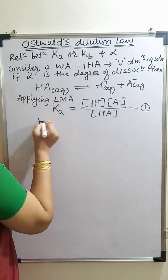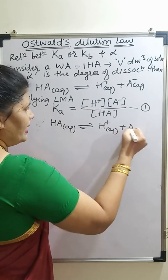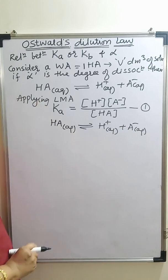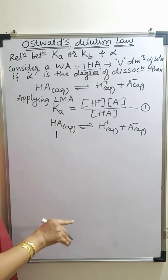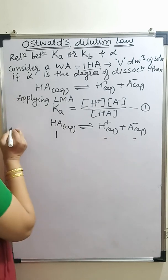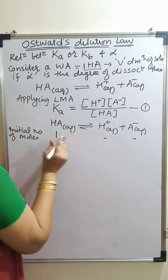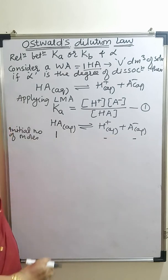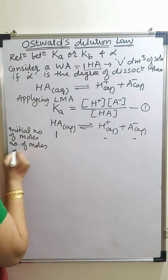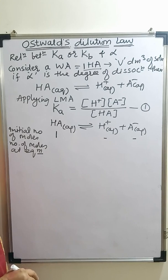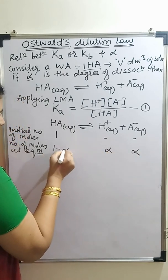Let us take the reaction again: HA aqueous gives H⁺ aqueous and A⁻ aqueous. How many moles initially? 1 mole. When I add this 1 mole of HA in water, no dissociation will take place — initial number of moles. As the time passes, the dissociation process will continue. At equilibrium, if alpha is the degree of dissociation, moles of H⁺ = alpha, moles of A⁻ = alpha, and moles of HA = 1 minus alpha.